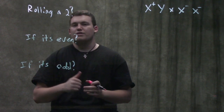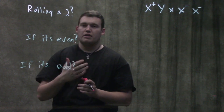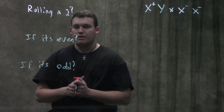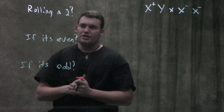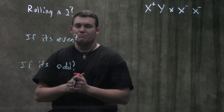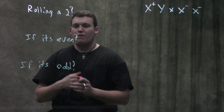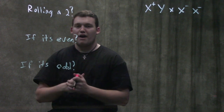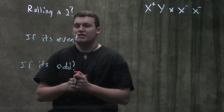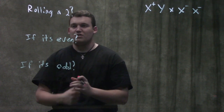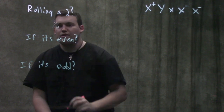To start off, we're going to talk about something more elementary than a genetics problem: the chances of rolling a two on a fair die. We've got six possibilities — one, two, three, four, five, and six — and we want to know what the chance of rolling exactly a two is. It's going to be one-sixth.